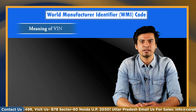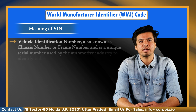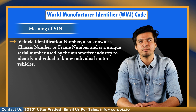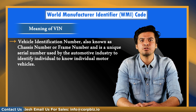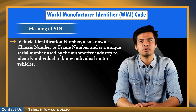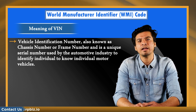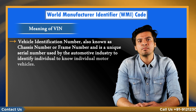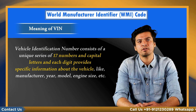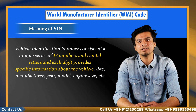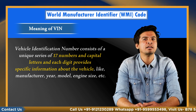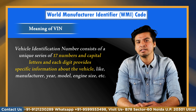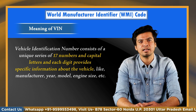VIN, or Vehicle Identification Number, also known as chassis number or frame number, is a unique serial number used by the automotive industry to identify individual motor vehicles. The VIN consists of a unique series of 17 numbers and capital letters, and each digit provides specific information about the vehicle such as manufacturer, year, model, engine size, etc.